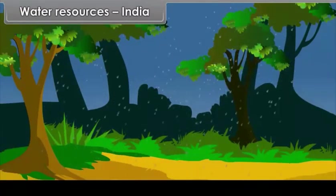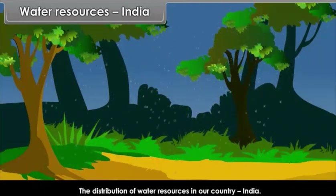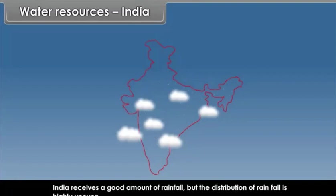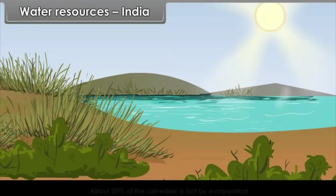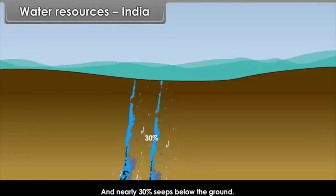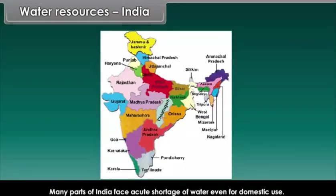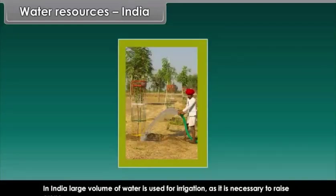Water resources India. Here we will study the distribution of water resources in our country India. India receives a good amount of rainfall, but the distribution of rainfall is highly uneven. About 20% of the rainwater is lost by evaporation and nearly 30% seeps below the ground. Many parts of India face acute shortage of water even for domestic use. In India, large volume of water is used for irrigation as it is necessary to raise crops.